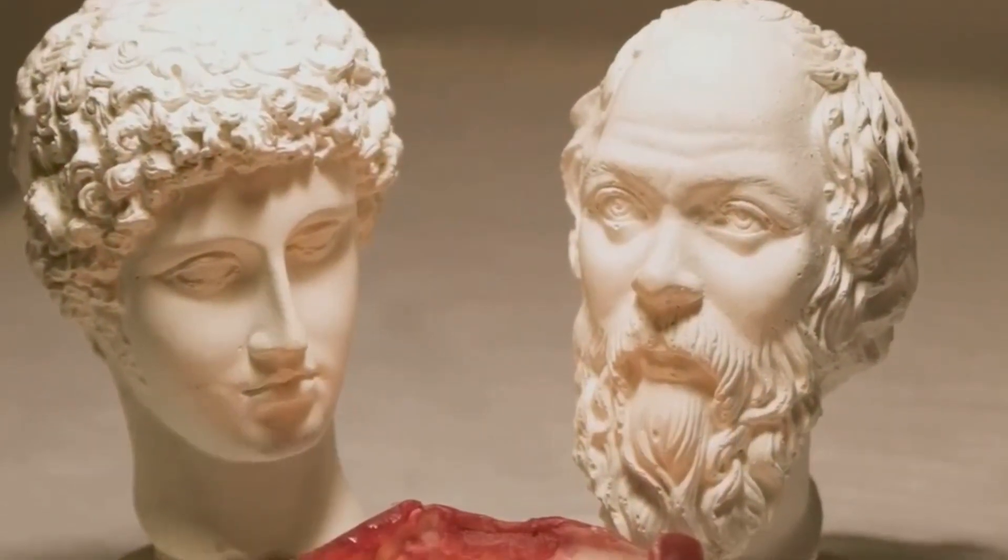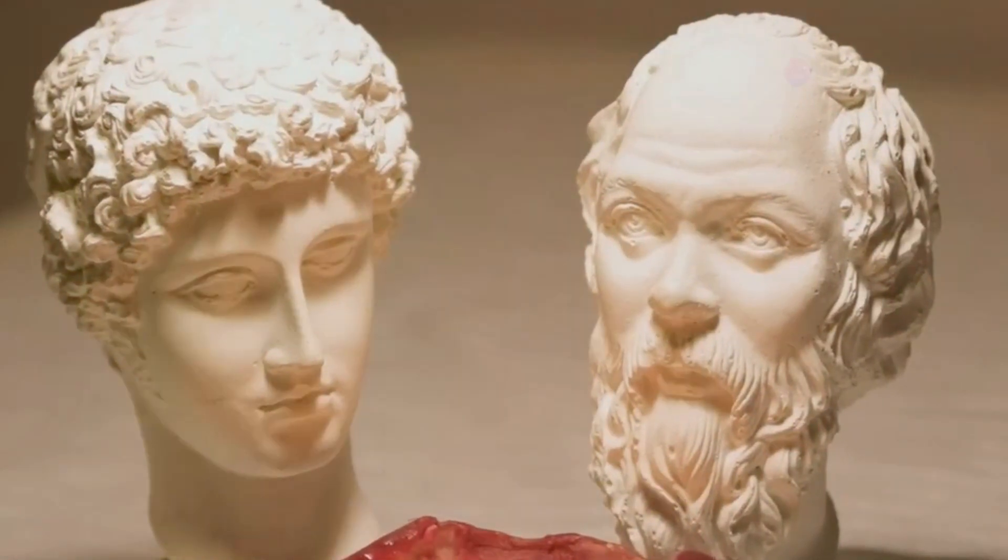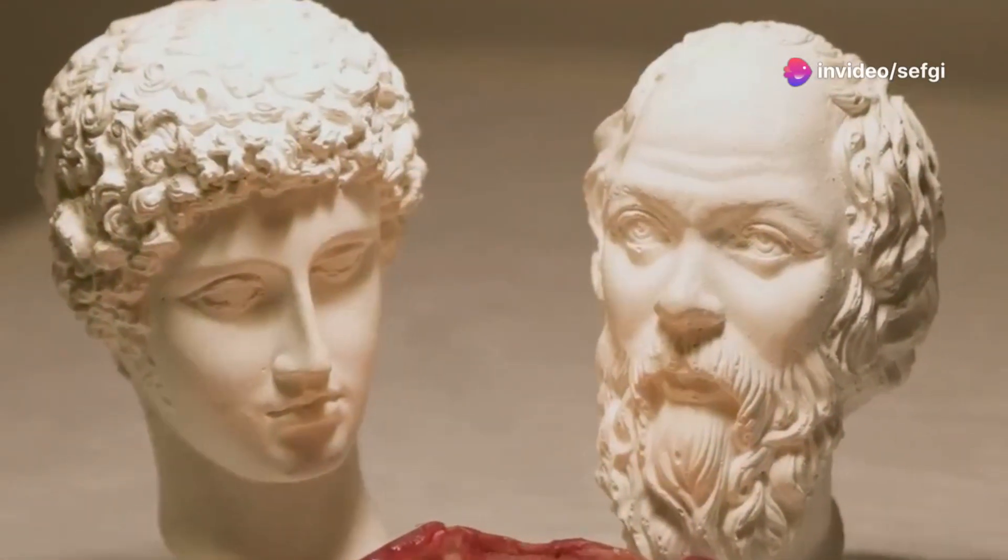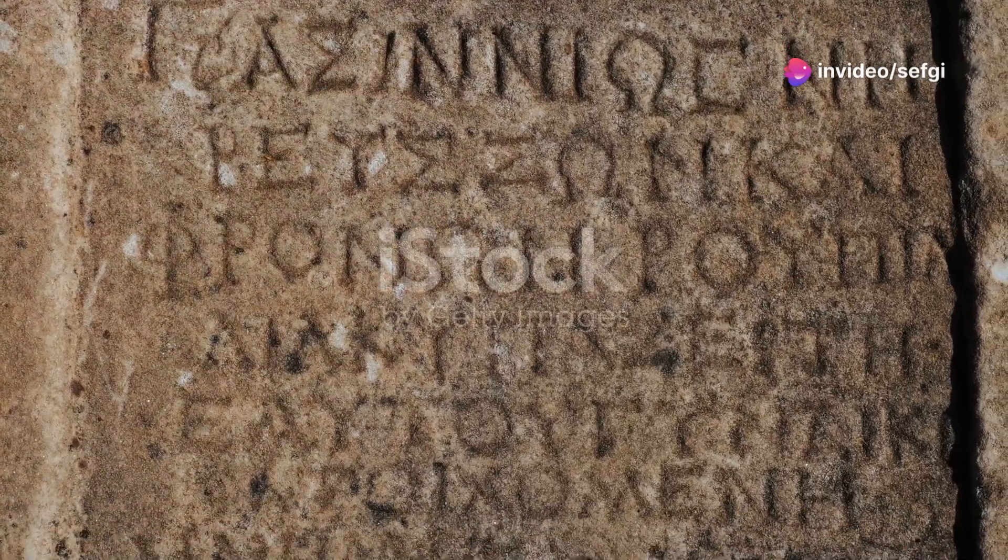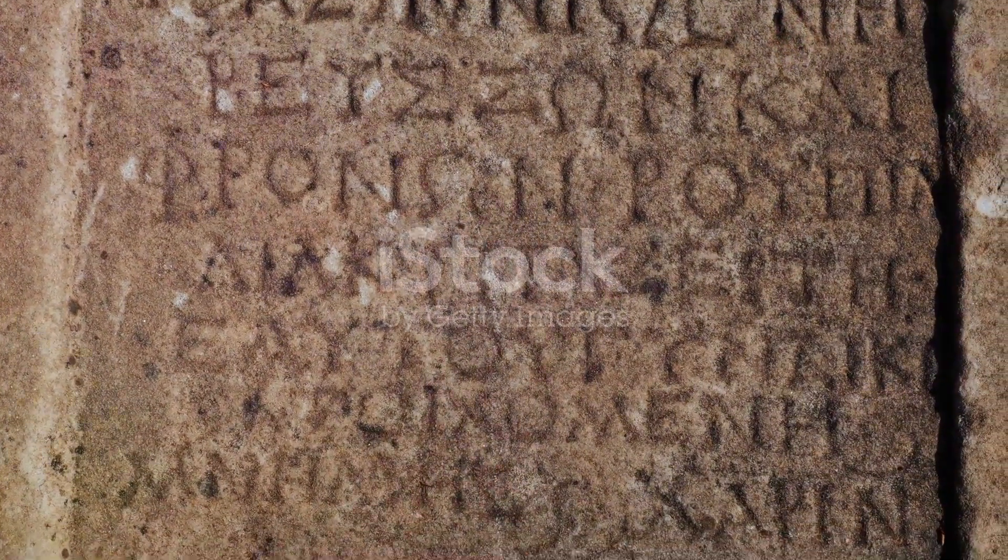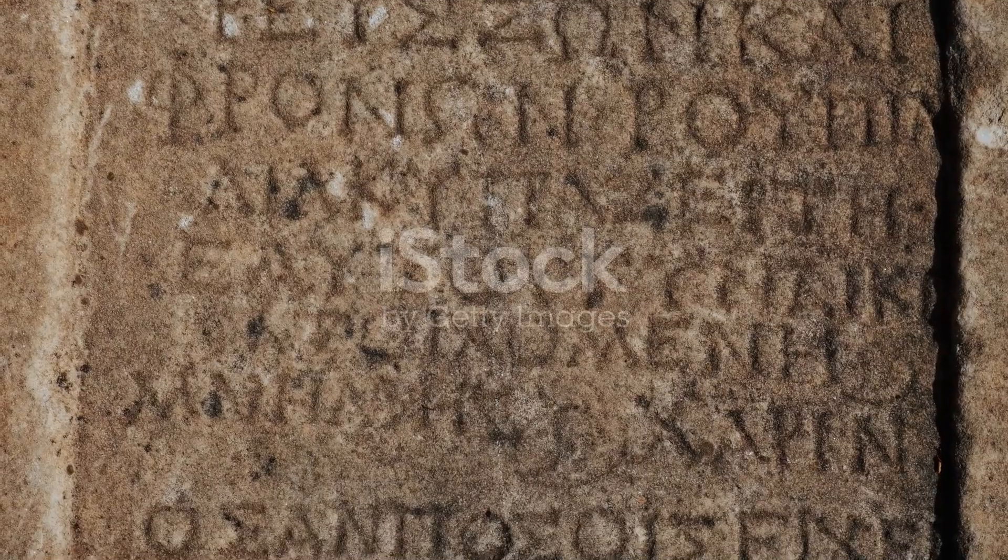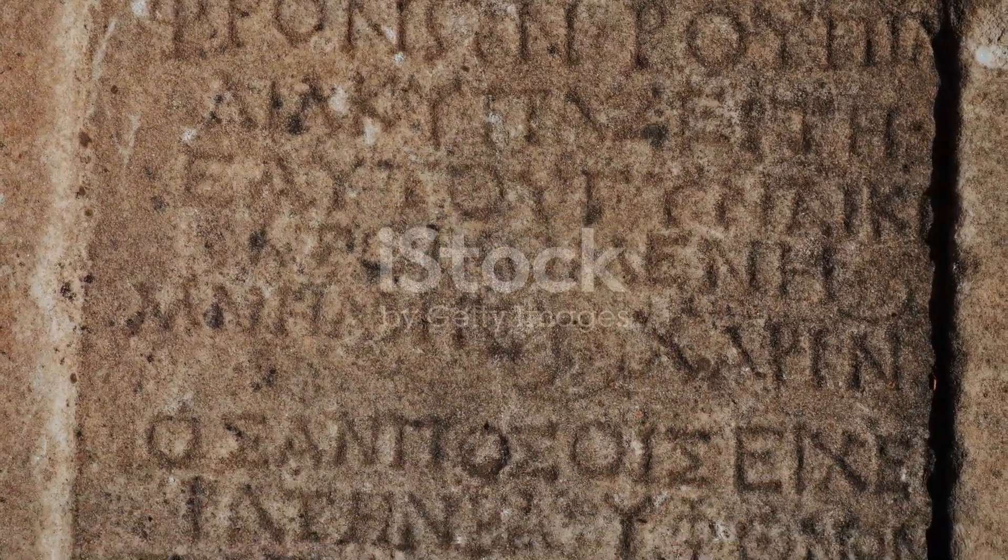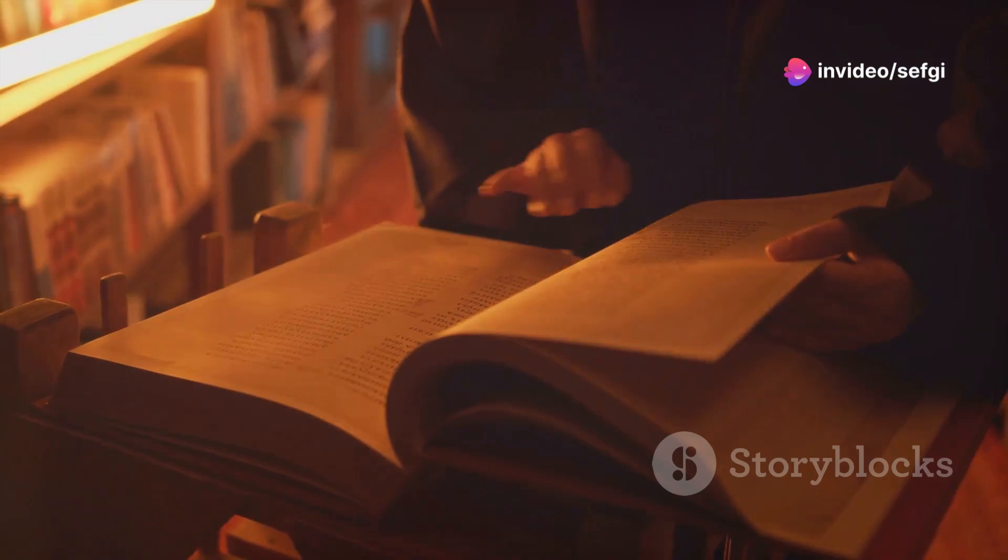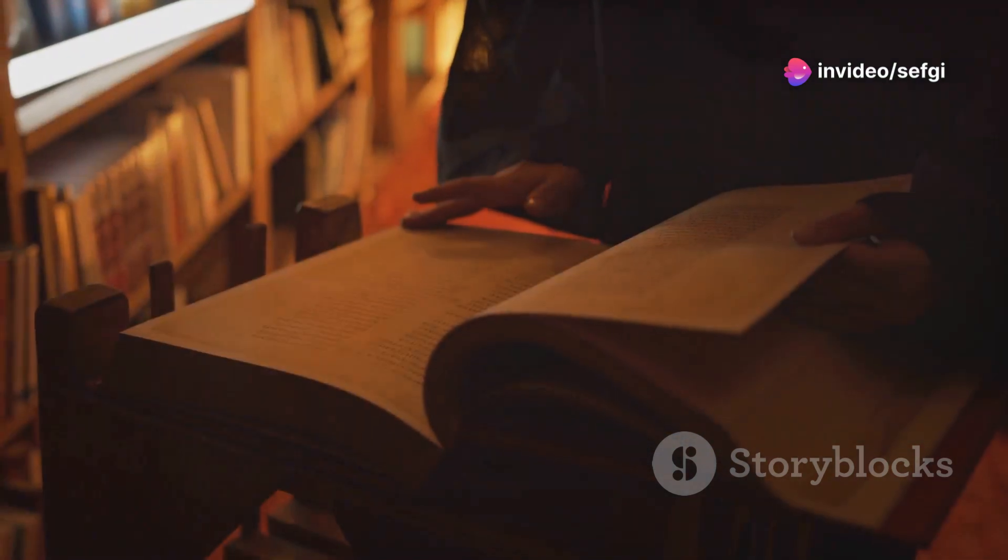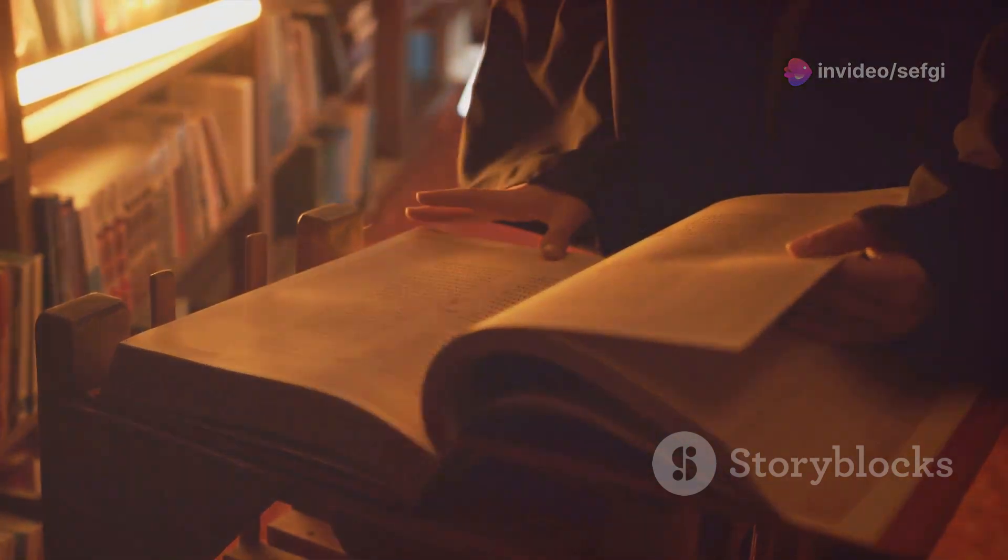The idea of atoms has been around for centuries. It all began with the musings of ancient Greek philosophers. Ancient Greek philosophers first proposed that matter was made up of indivisible particles they called atomos, meaning uncuttable. These early thinkers like Democritus and Leucippus imagined that if you kept cutting a piece of matter into smaller and smaller pieces, you would eventually reach a particle that could not be divided any further.